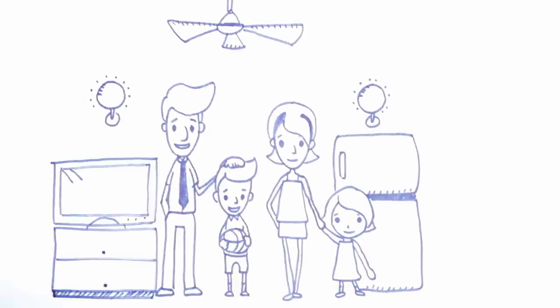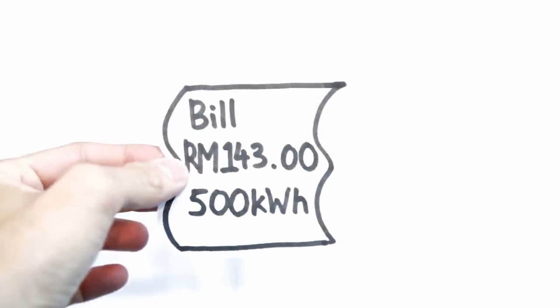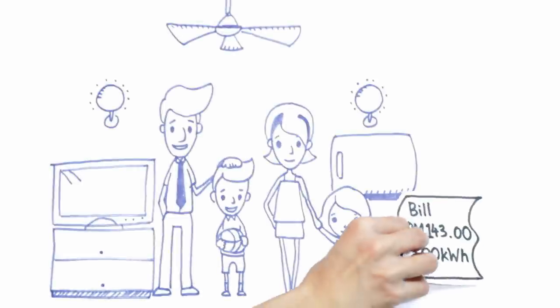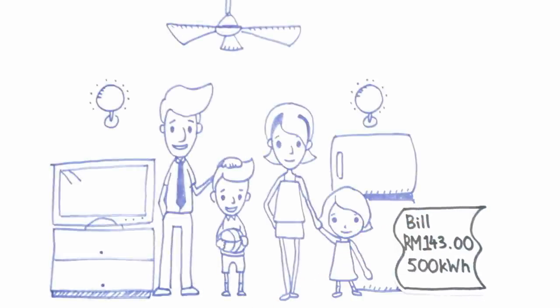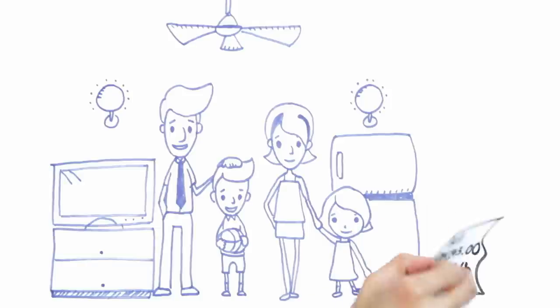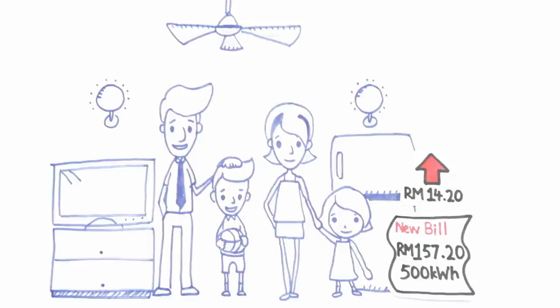Now meet family B, whose average monthly bill is 143 ringgit. They use an average of 500 kilowatt hour per month. With the revised tariff, their average new monthly bill will be 157 ringgit and 20 cent.